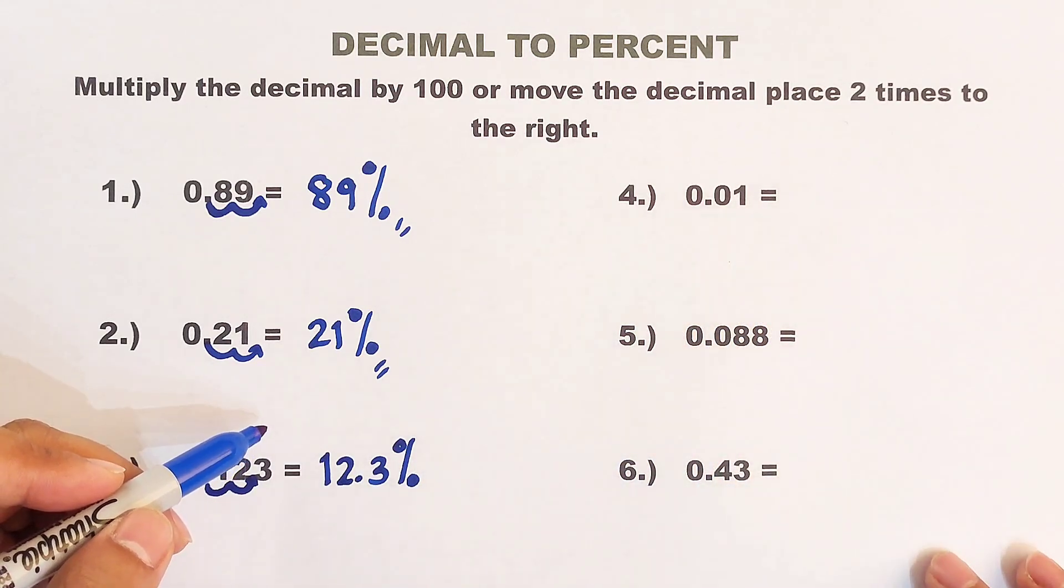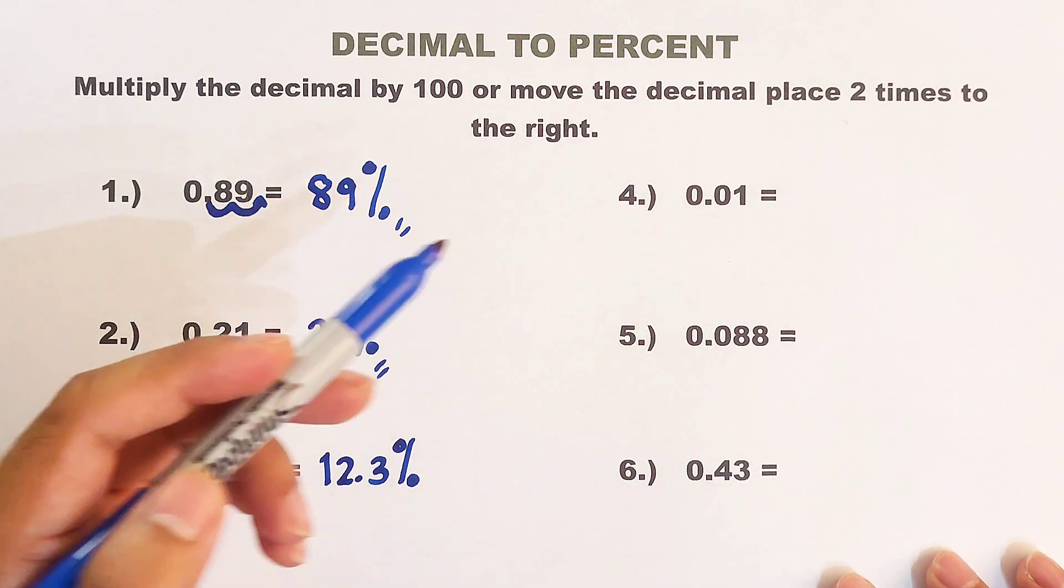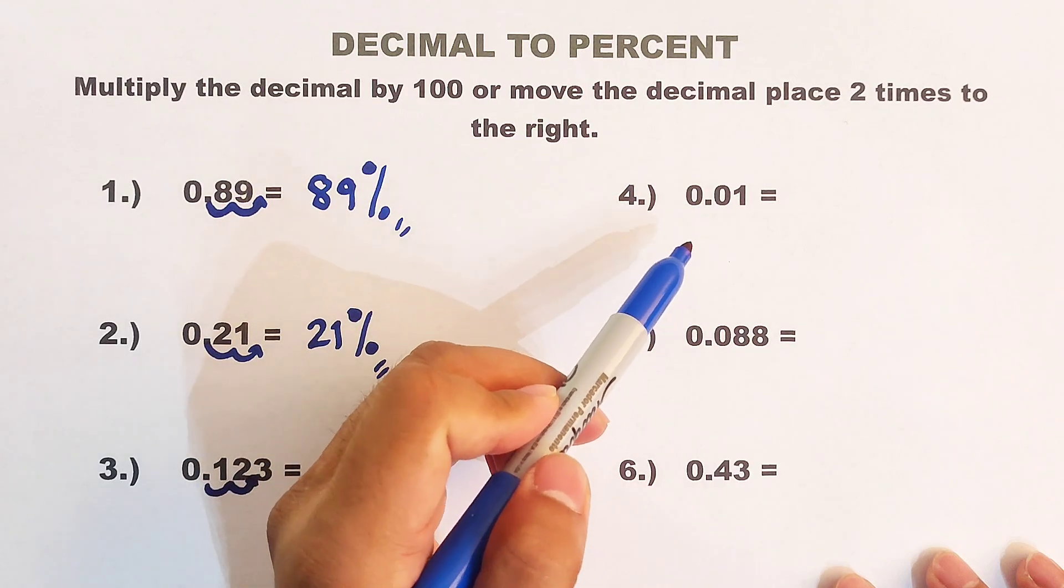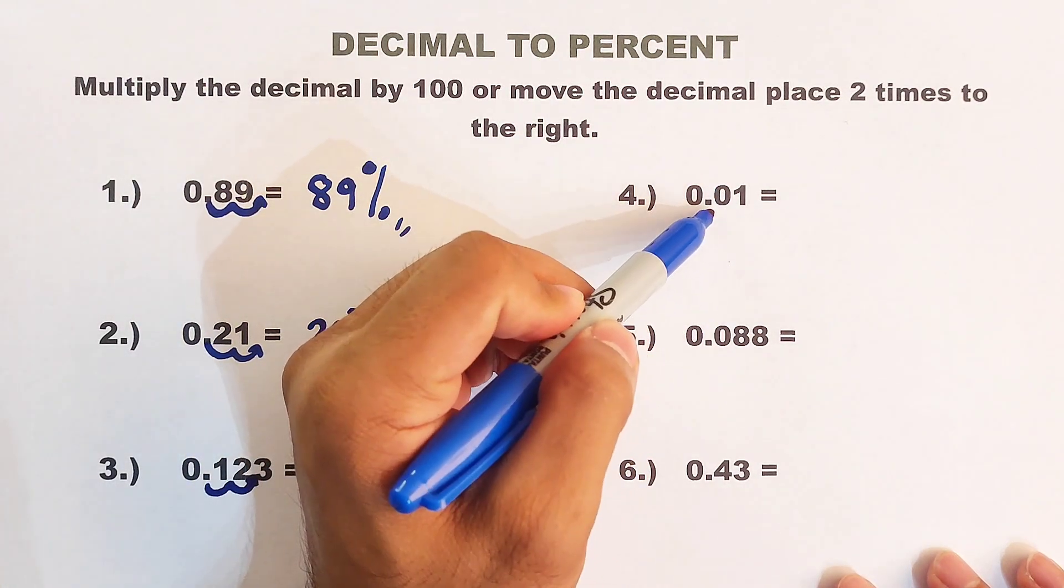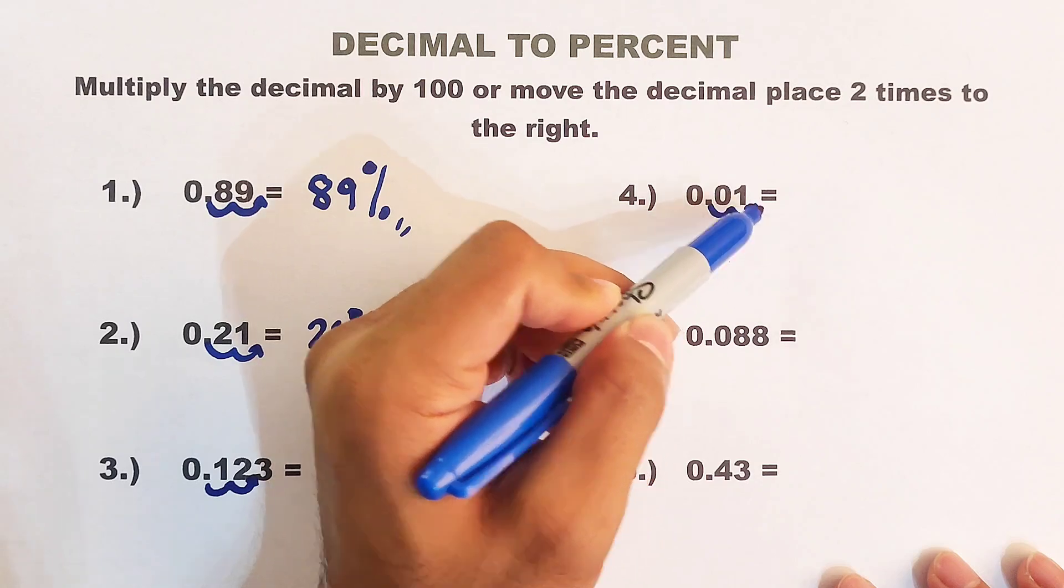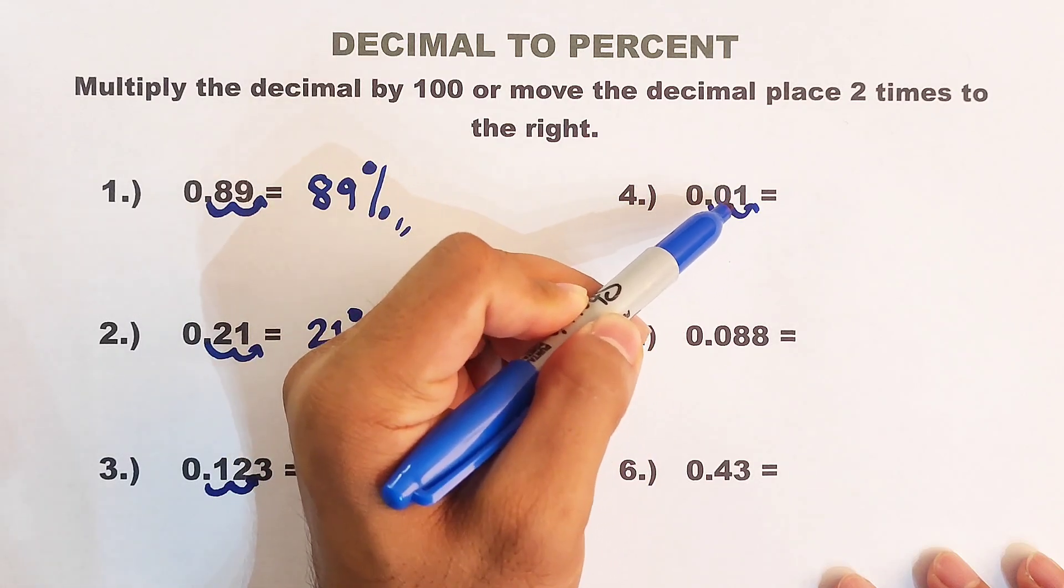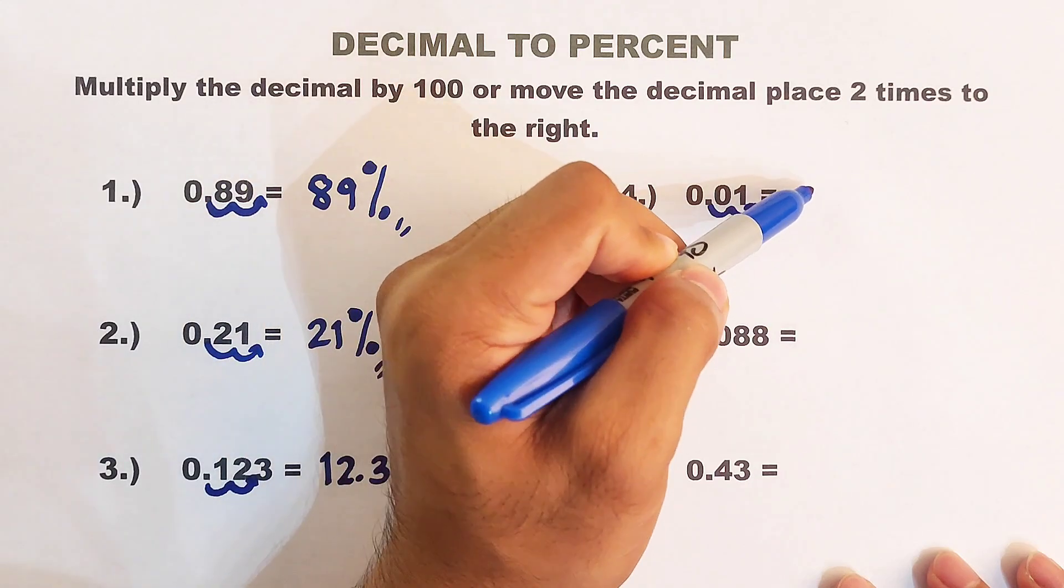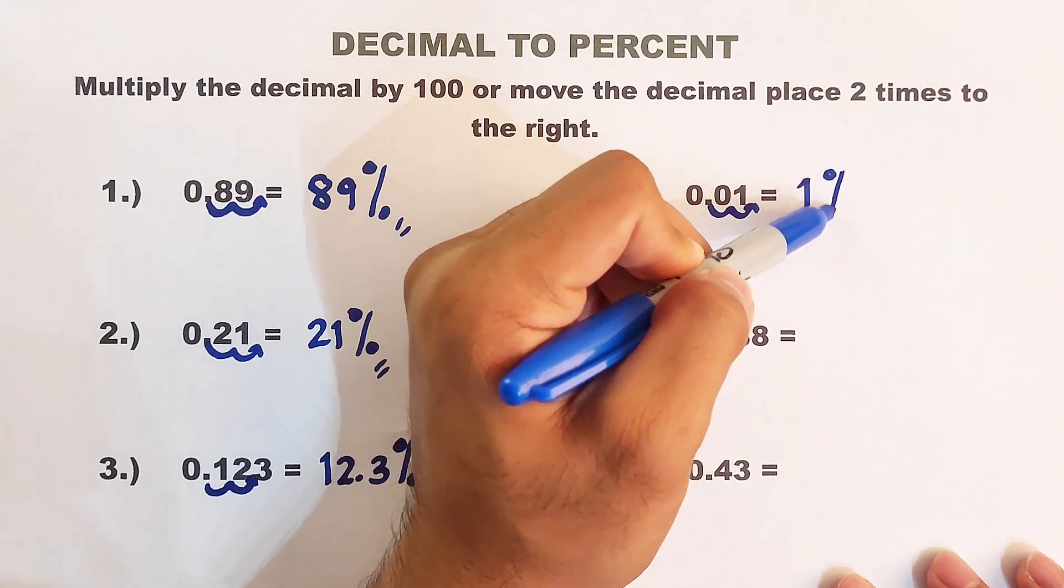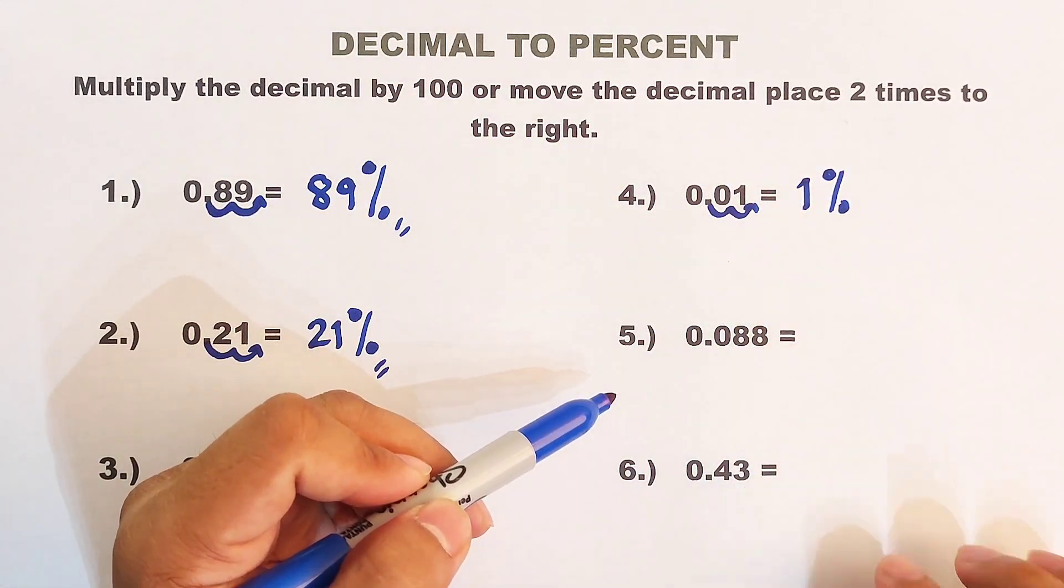Now let's have example number 4. This is 0.01. So as you can see, this is 0.01, 1 and 2. You can simply add 1 and then the percent sign. This is the answer.